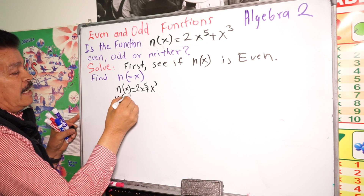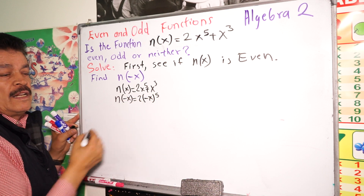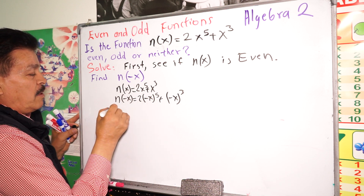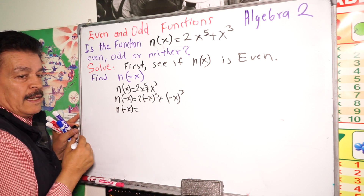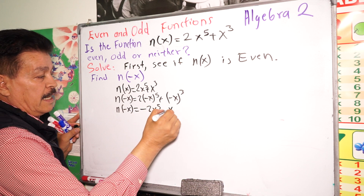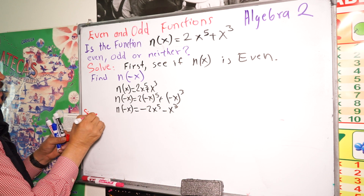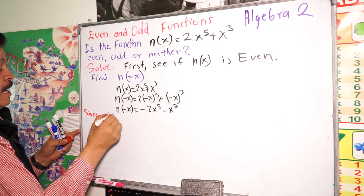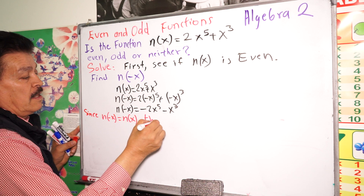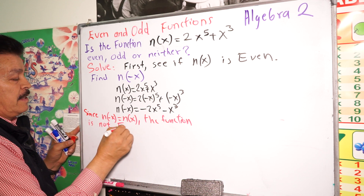Simplifying this, we are going to have n of negative x equals negative 2x to the fifth power minus x to the third power. Since n of negative x does not equal n(x), the function is not even.